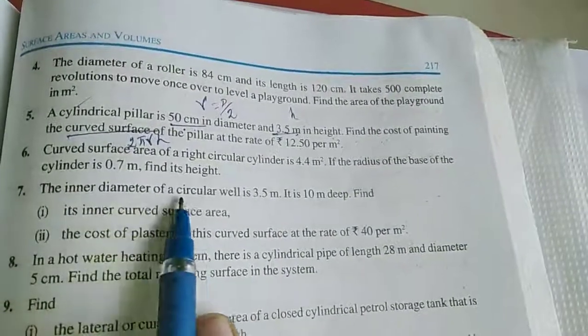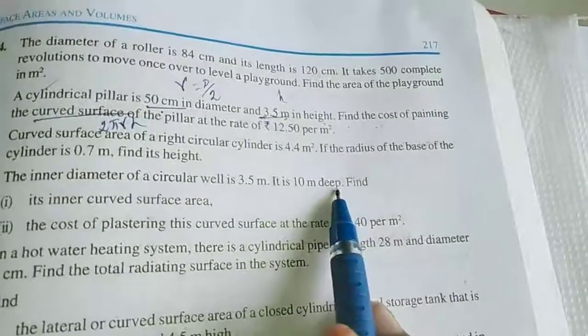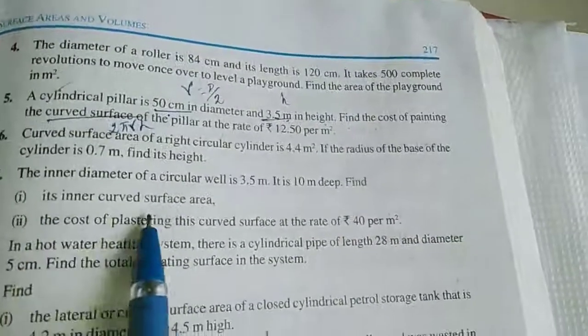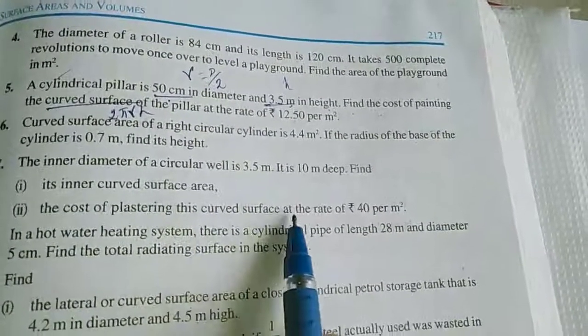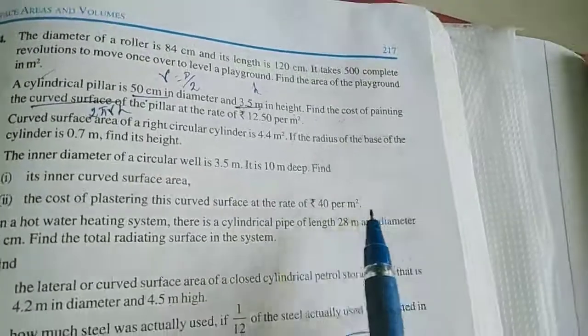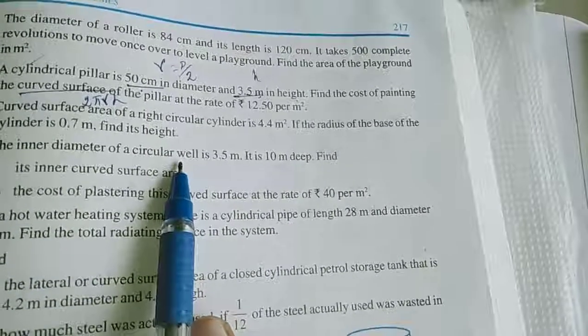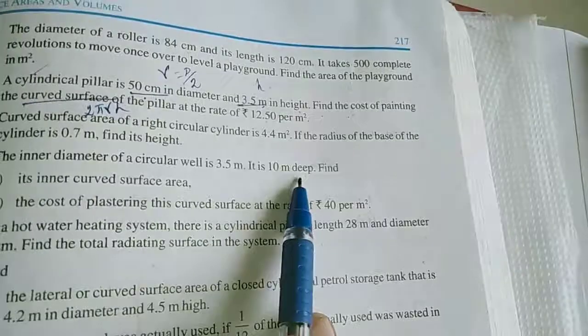The inner diameter of a circular well is 3.5 meter. It is 10 meter deep. Find its inner curved surface area. The cost of plastering this curved surface at the rate of Rs. 40 per meter square. The diameter of a circular well, depth and height.